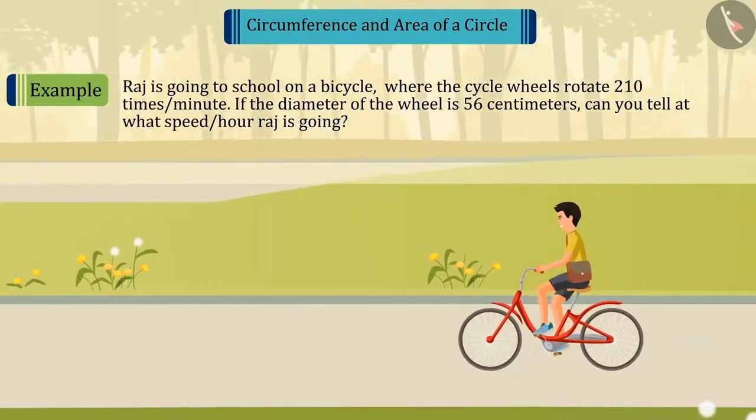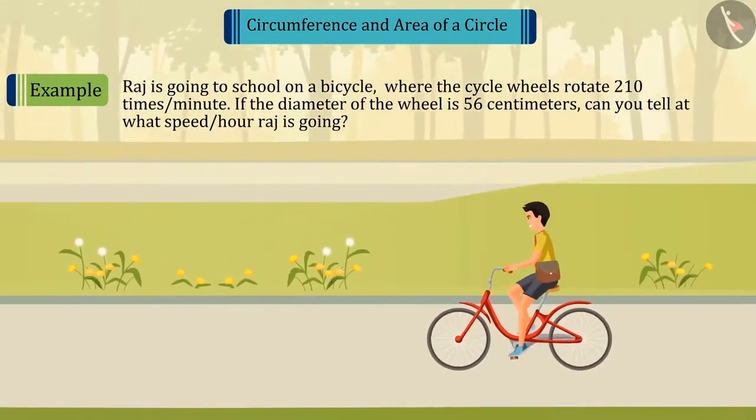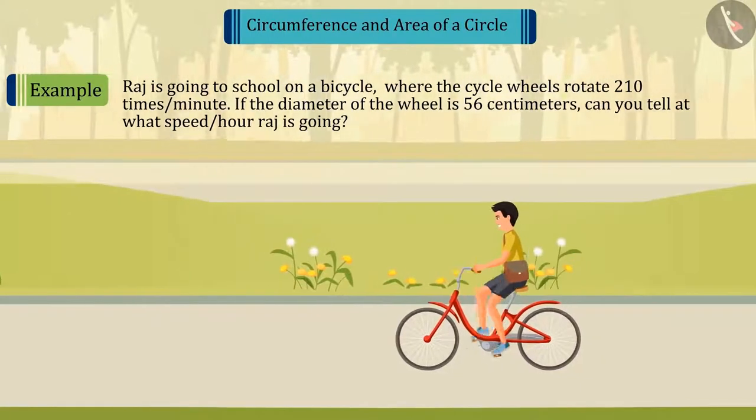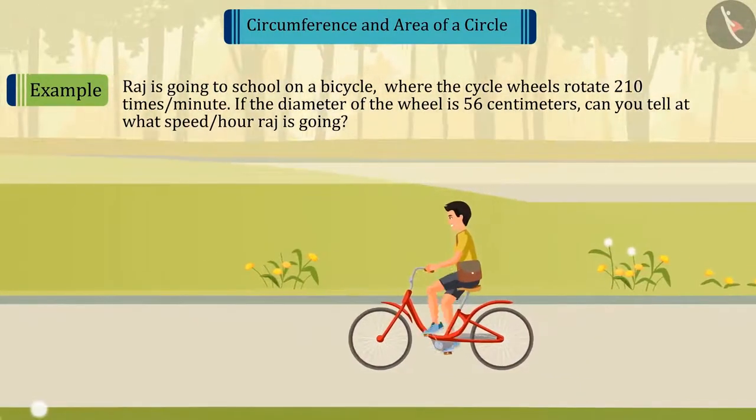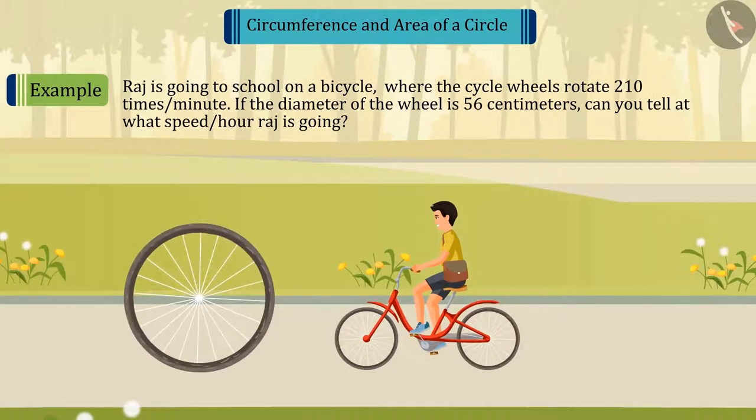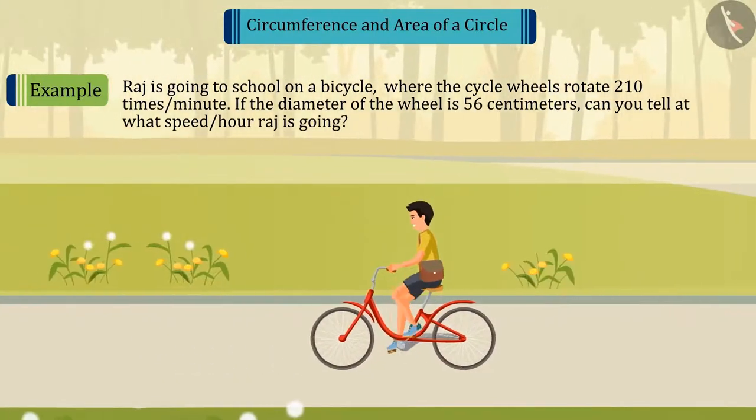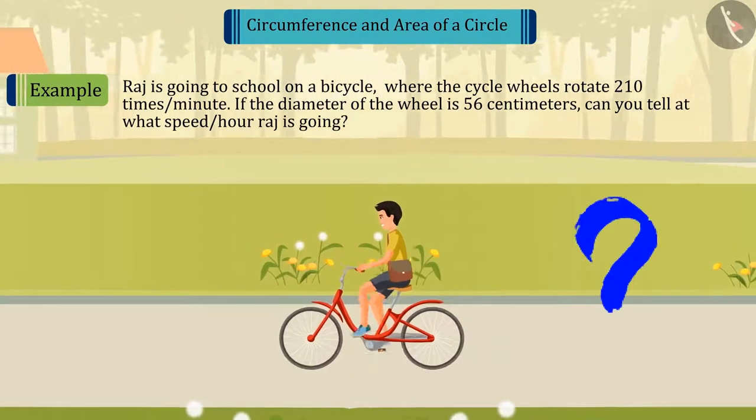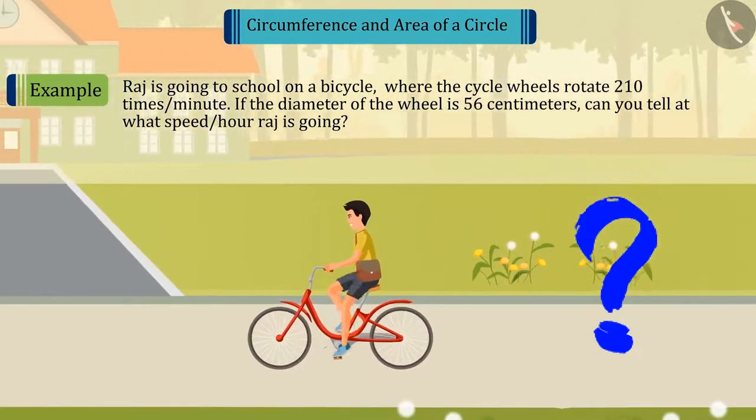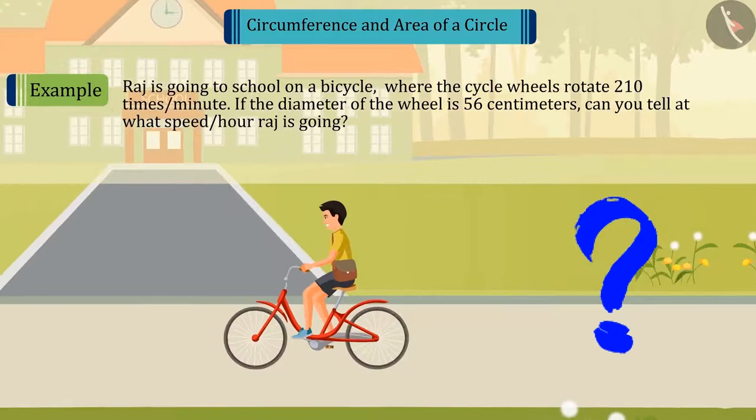Raj is going to school on a bicycle where the cycle wheels rotate 210 times per minute. If the diameter of the wheel is 56 cm, can you tell at what speed per hour Raj is going? Let's try to solve this.